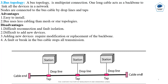Disadvantages of Bus Topology: Reconnection and fault isolation are difficult because all stations are connected to one cable, making it hard to identify where the fault has occurred. It is also difficult to add a new device because adding another device requires replacing the backbone link. Additionally, a fault or break in the bus cable stops all transmission — if the backbone link is damaged, the whole system is affected and all transmissions stop.